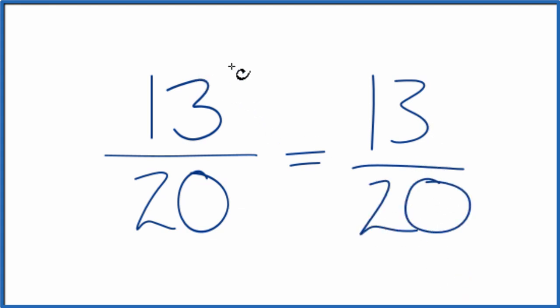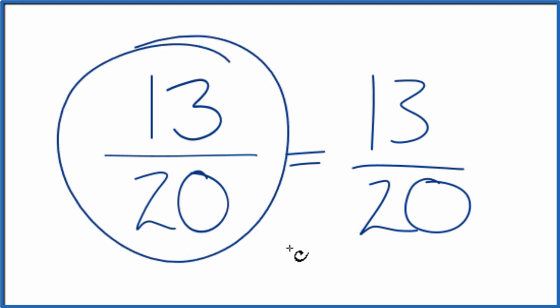What that means is that the fraction 13/20 is already simplified. It's already in lowest terms. We can't reduce this any further.